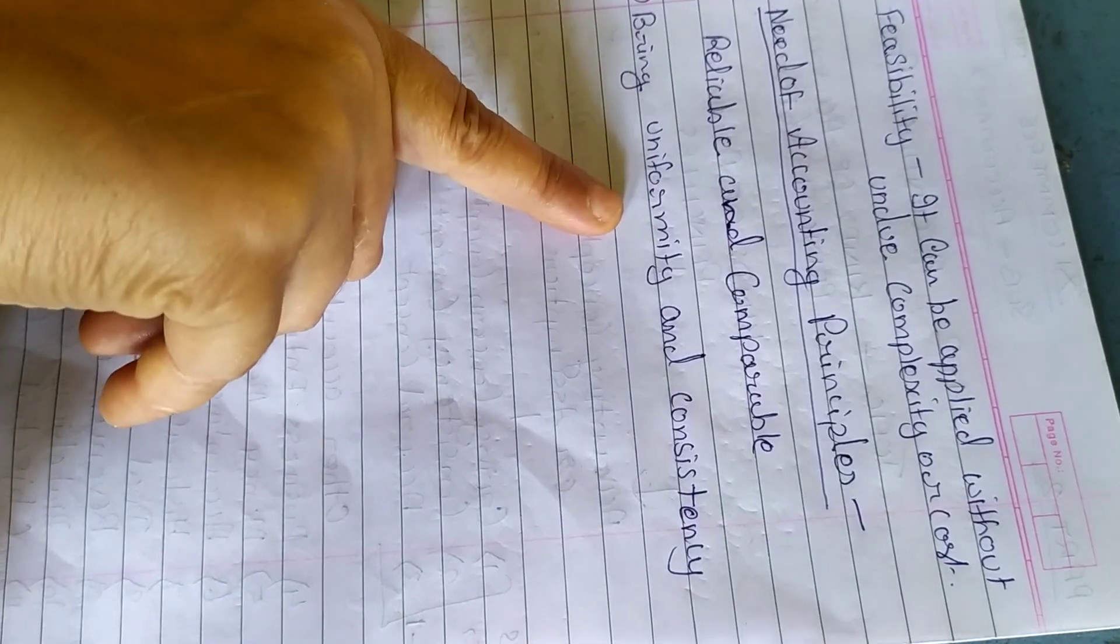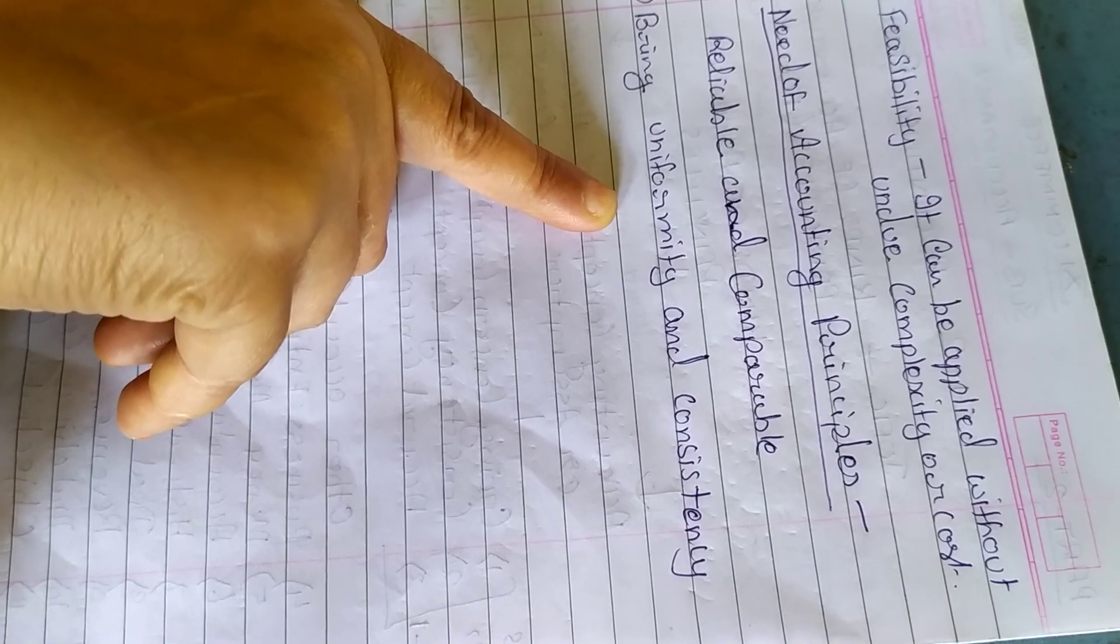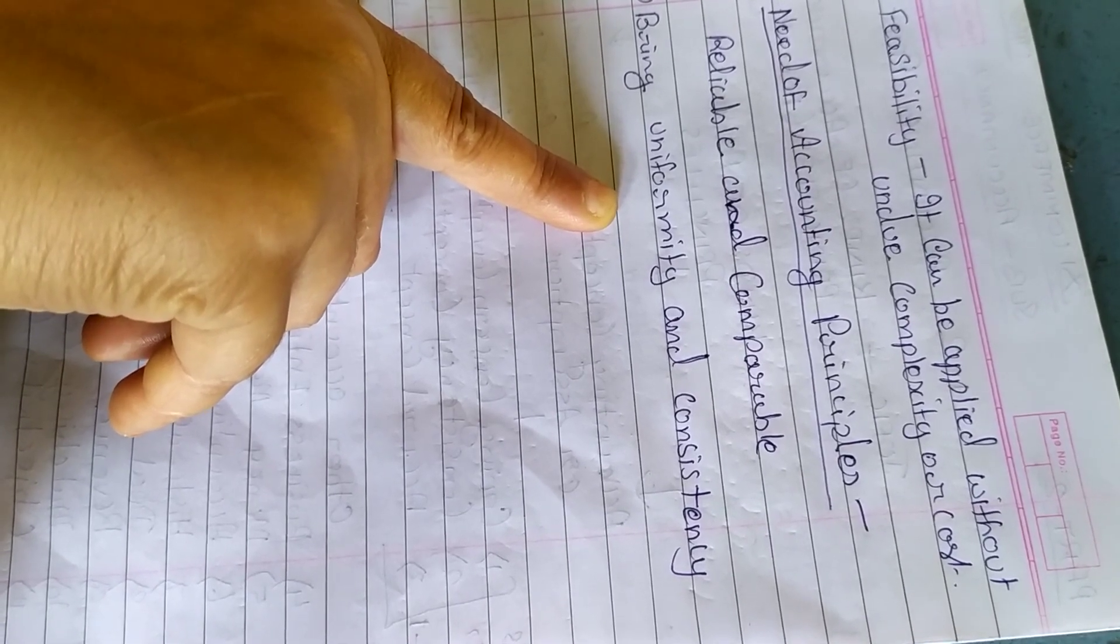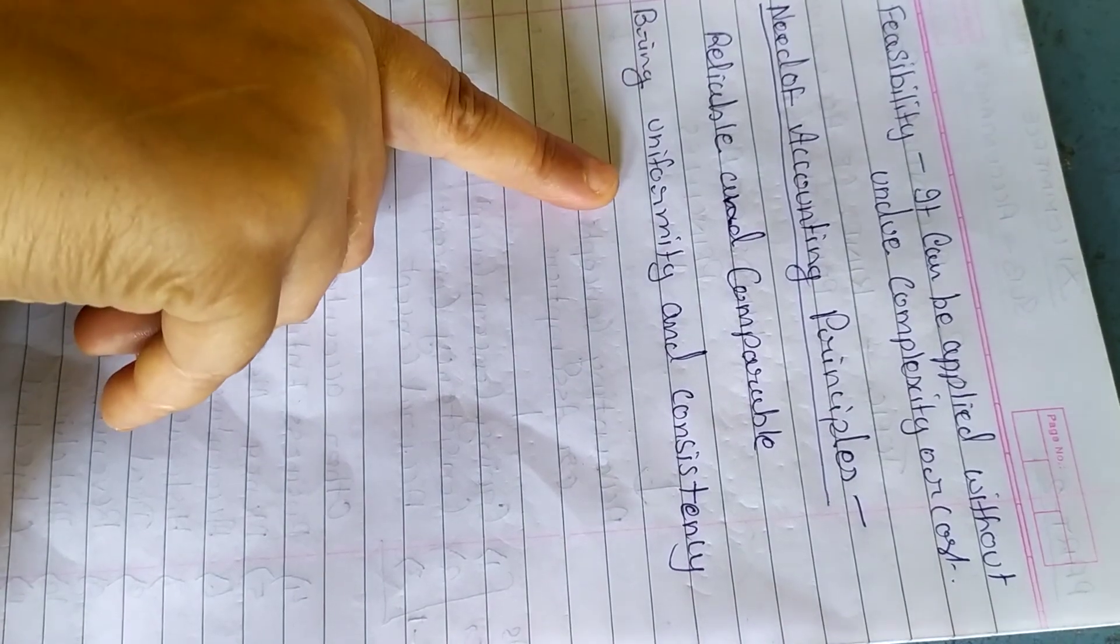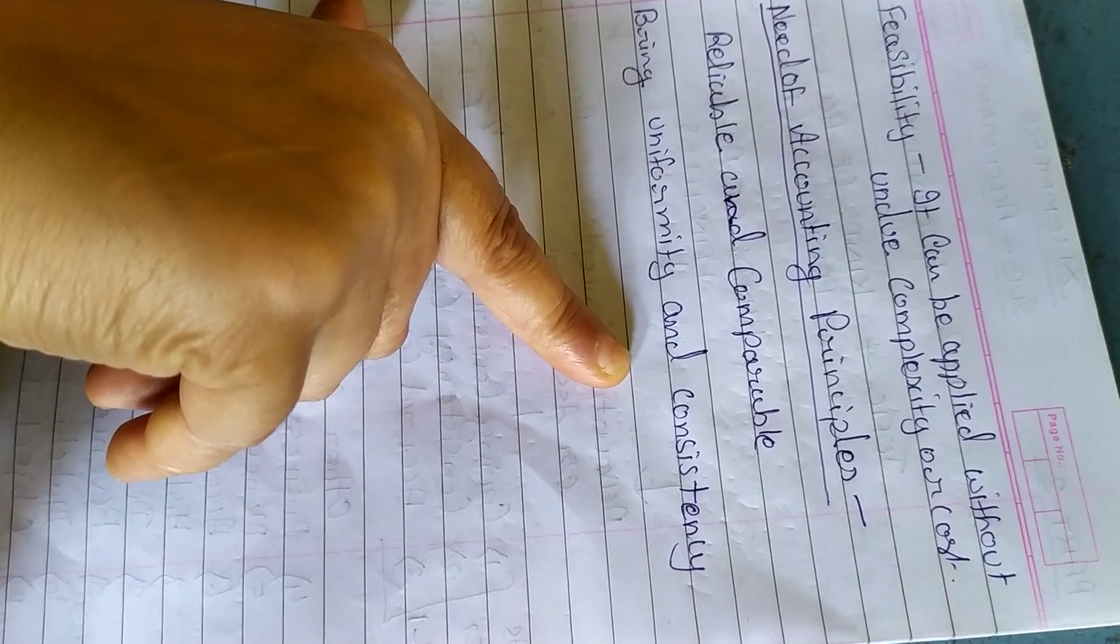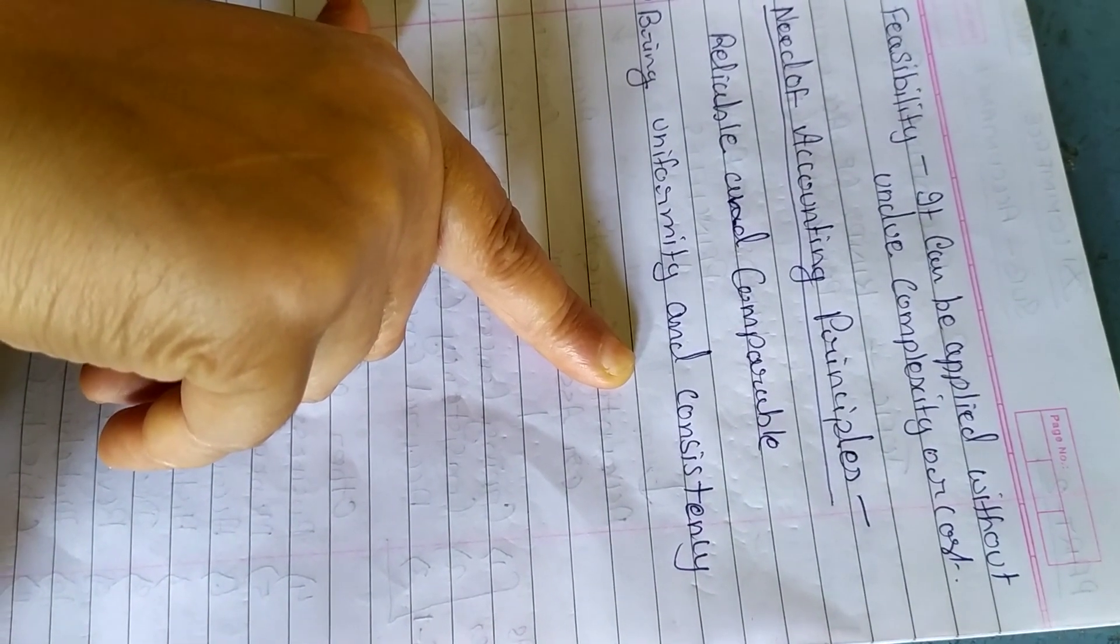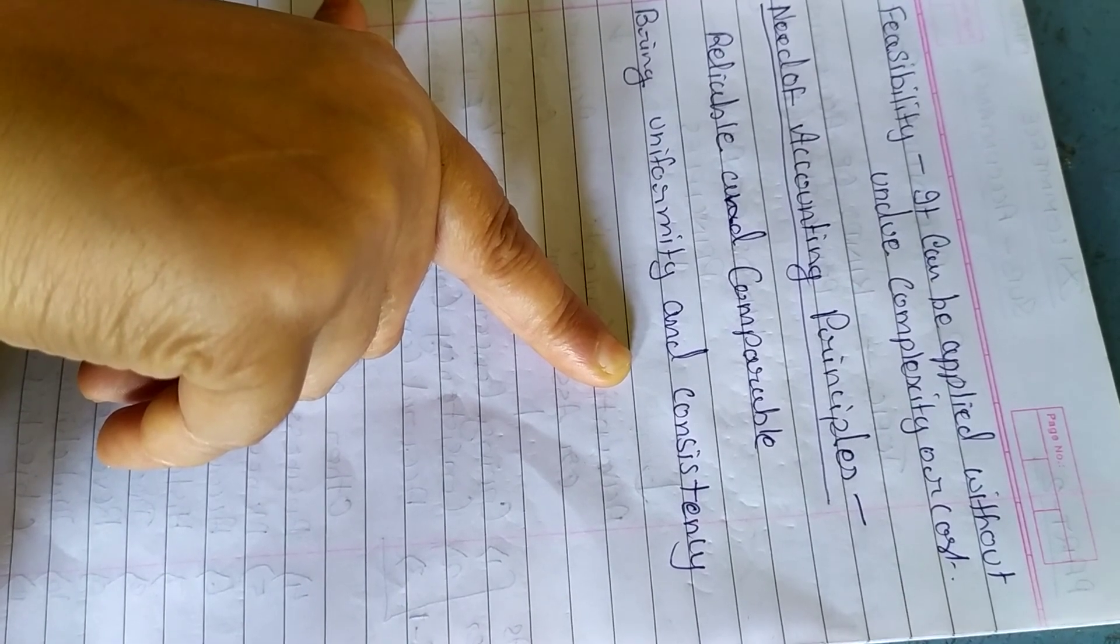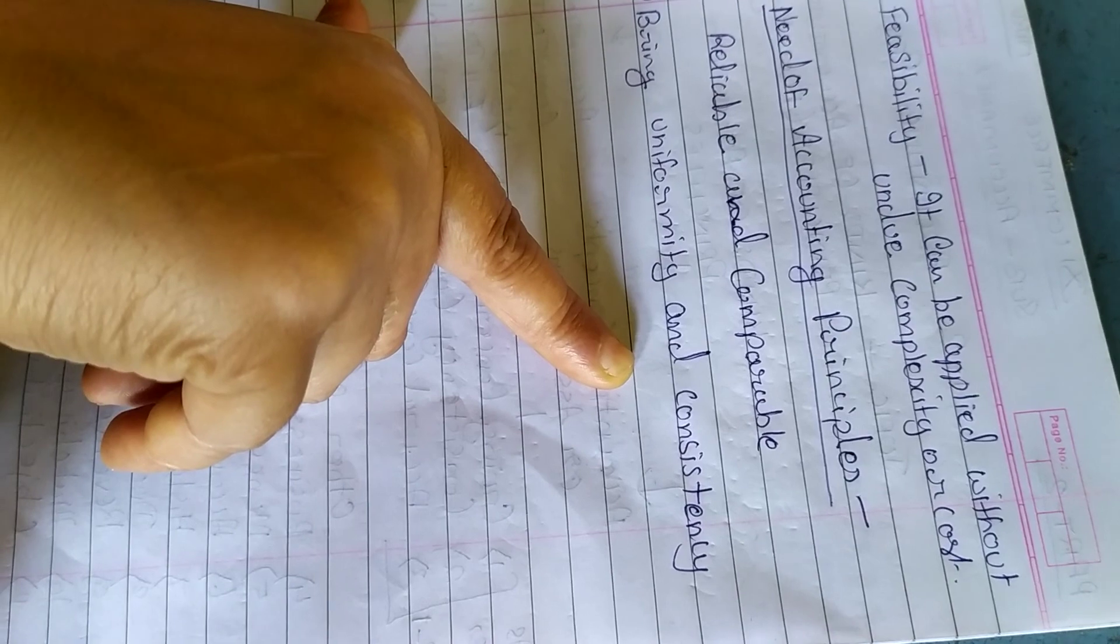Then, the next importance is it provides uniformity in the accounting, and the next and last one is accounting principle makes our accounting statement or makes the accounting more consistent by nature.